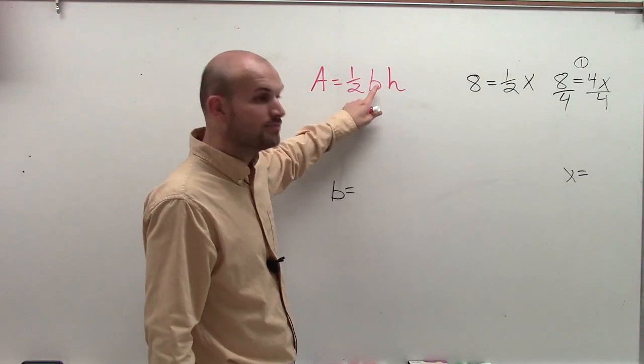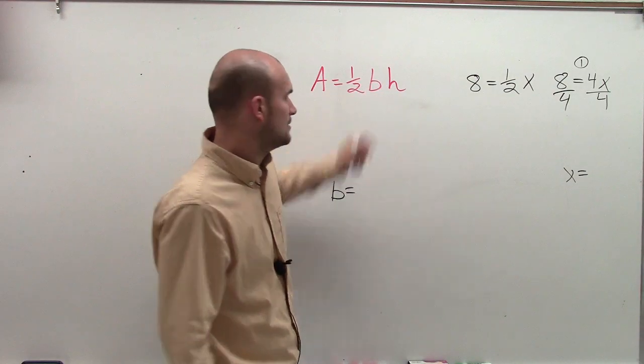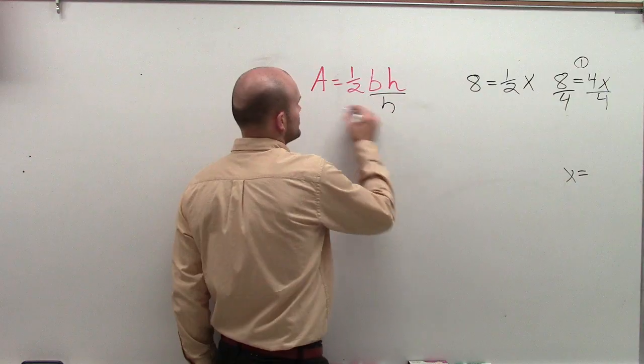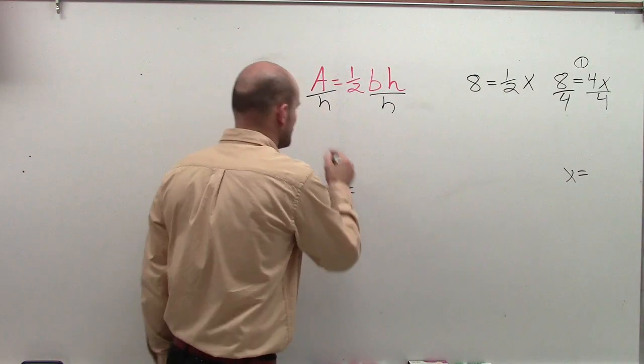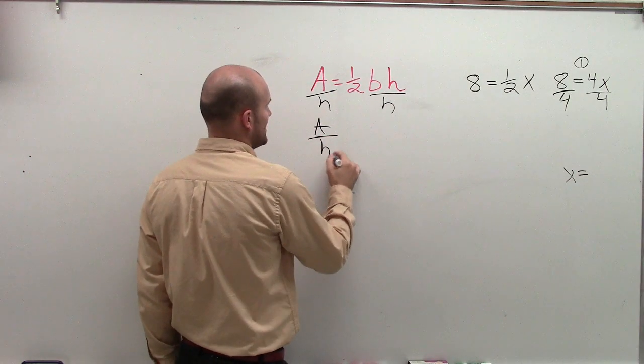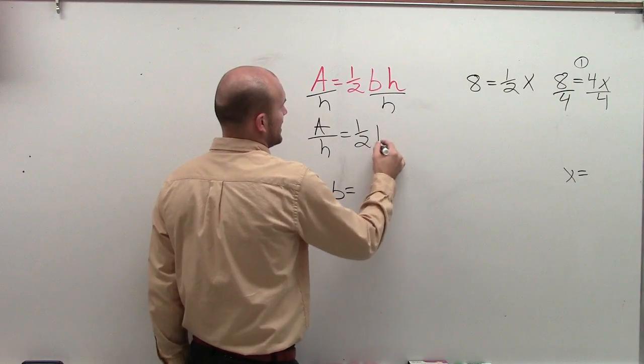Right, because h is multiplied by b. Does that make sense? So we need to divide by h. So now I have a divided by h equals one-half b.